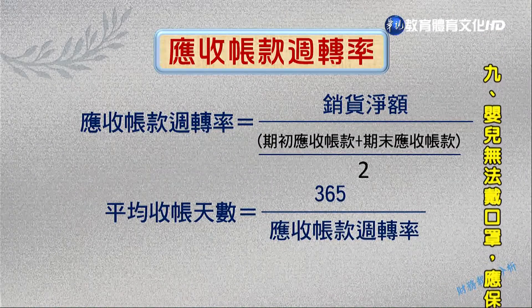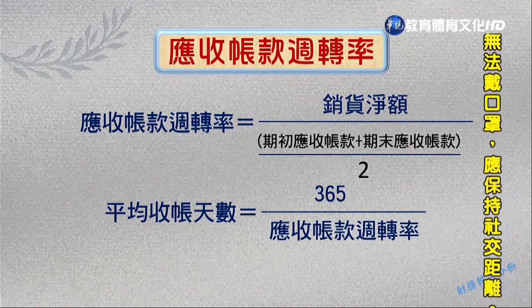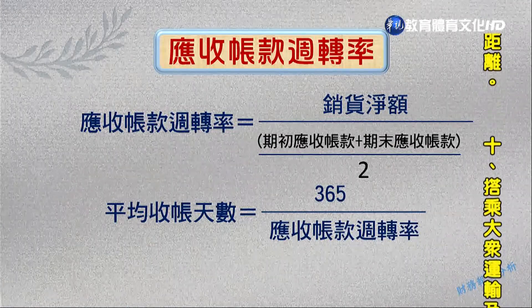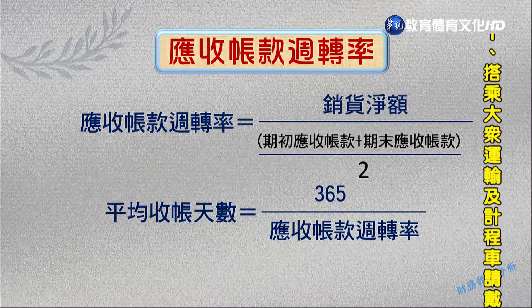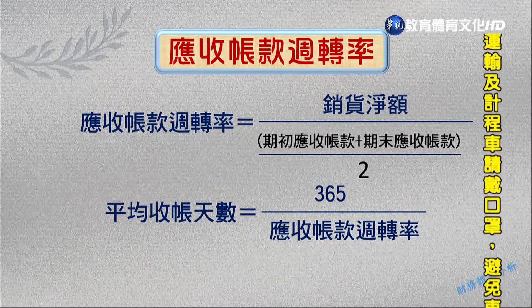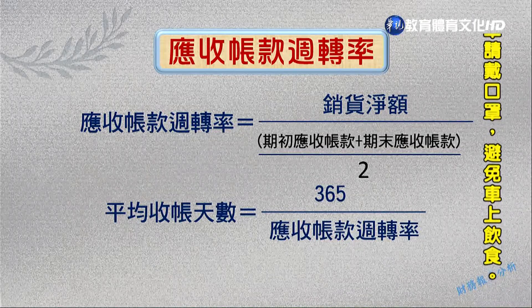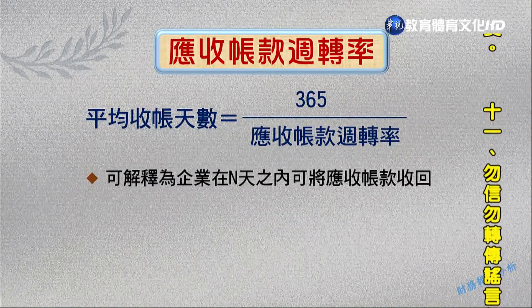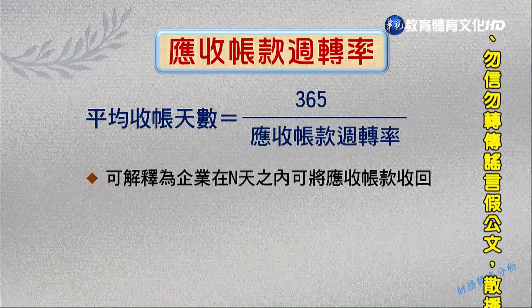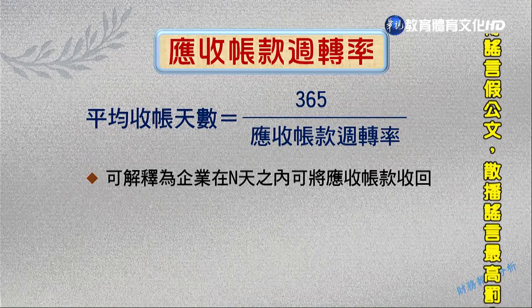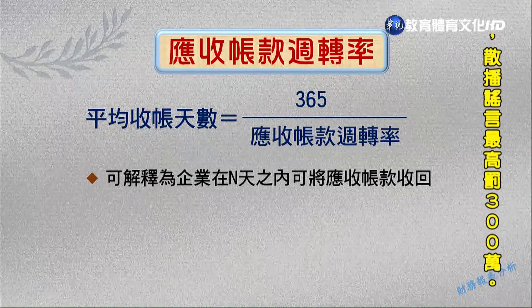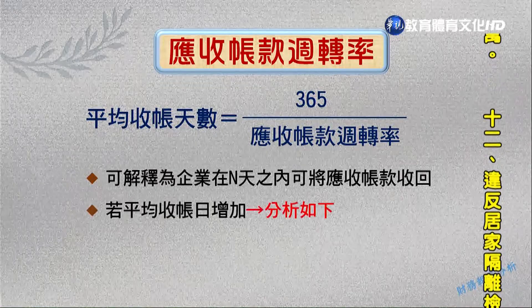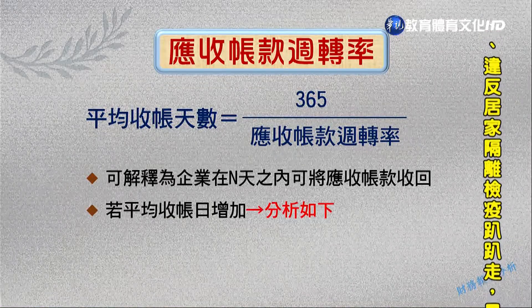除了應收賬款周轉率，也可以用應收賬款天數來衡量。計算方法是把365天除以應收賬款周轉率，就可以得到平均收賬天數。這個平均收賬天數可以解釋企業在多少天裡面可以將應收賬款收回來。如果企業的平均收賬日增加，要分析其背後的原因。